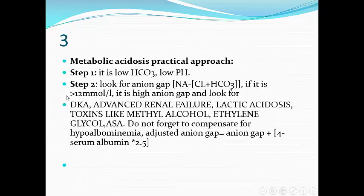High anion gap metabolic acidosis is due to production of endogenous or exogenous acid. Endogenous acids include beta-hydroxybutyric acid and acetoacetic acid in ketoacidosis, phosphoric and sulfate in advanced renal failure, and lactic acid in lactic acidosis. Exogenous acids coming from outside include methanol, ethylene glycol, and acetylsalicylic acid. Adding an acid to the circulation — endogenously or exogenously — will cause high anion gap metabolic acidosis.